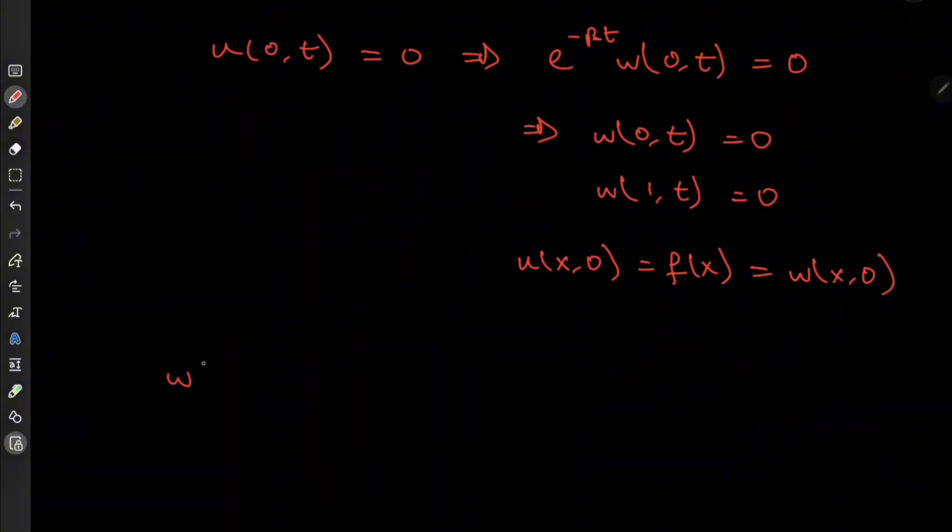your heat equation solves out to w of x and t being equal to the sum over k from 1 to infinity of A sub k times e to the minus n squared pi squared t multiplied by